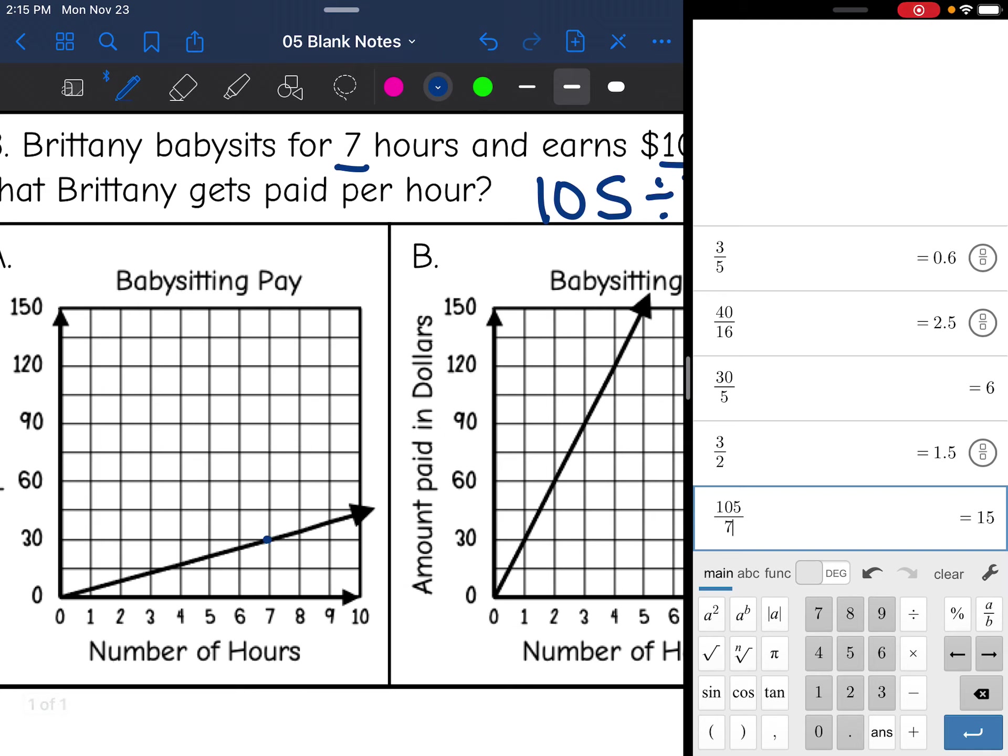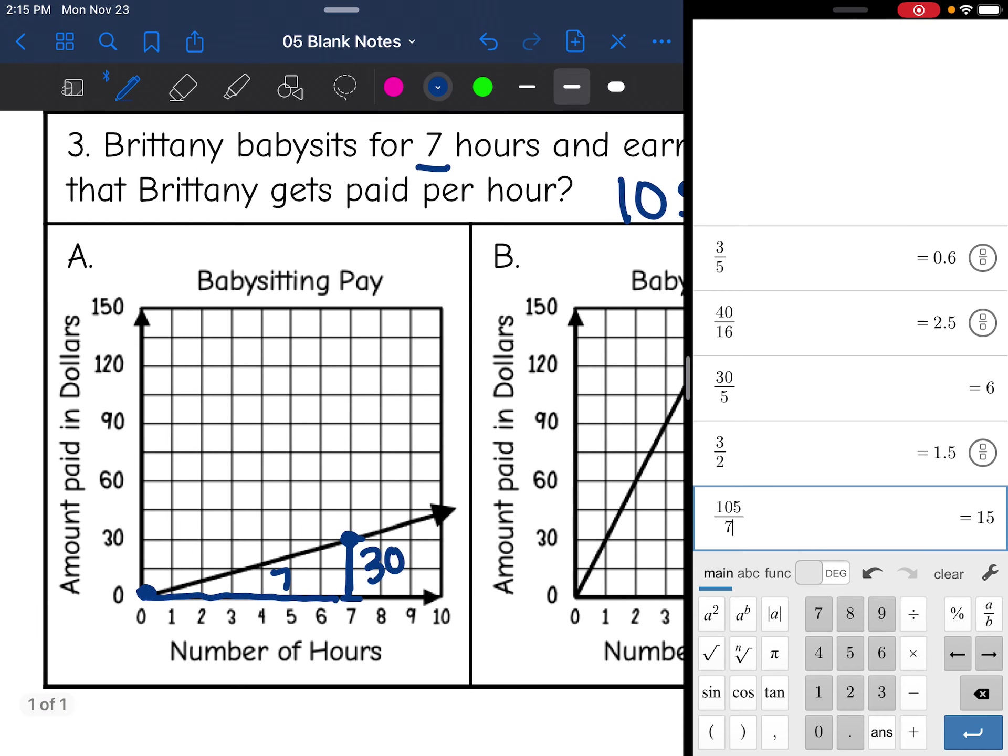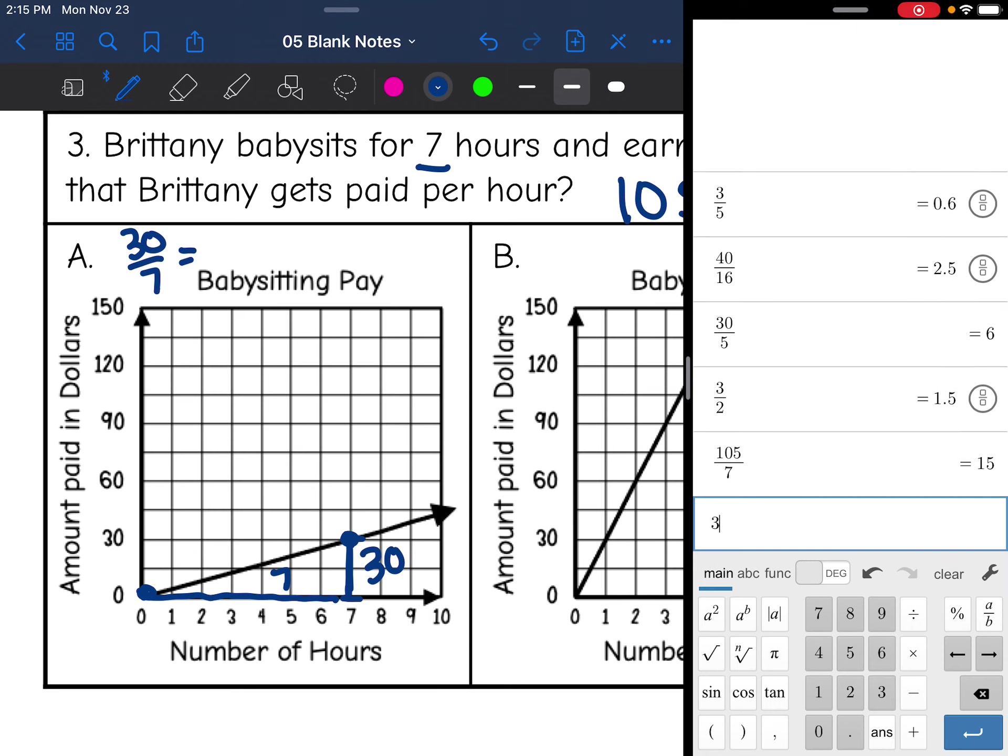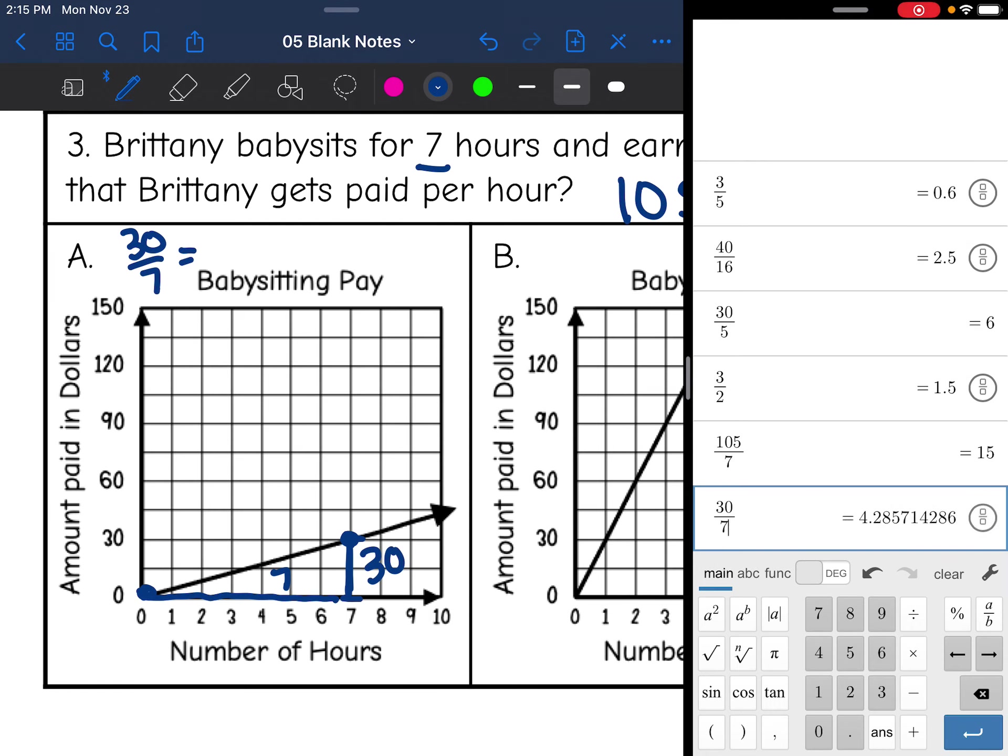Here's a perfect corner and here's a perfect corner on this first graph. My rise is from 0 to 30, so the rise is 30. And the run is from 0 to 7, so it is 7. So the slope of this graph would be 30 over 7. I don't think 30 over 7 is going to be 15. It is 4.29, which is definitely not 15. So graph A is not going to work.